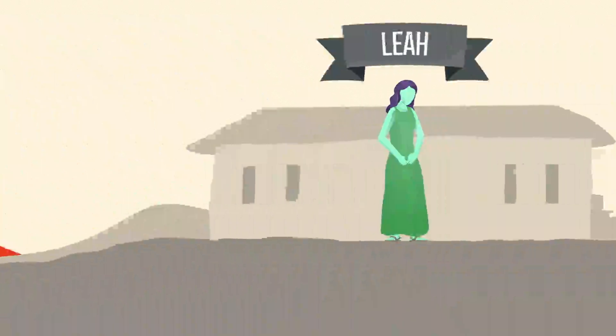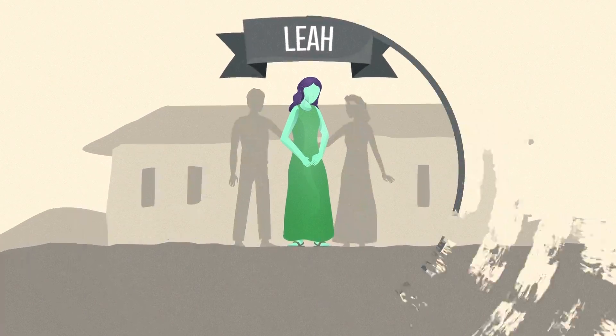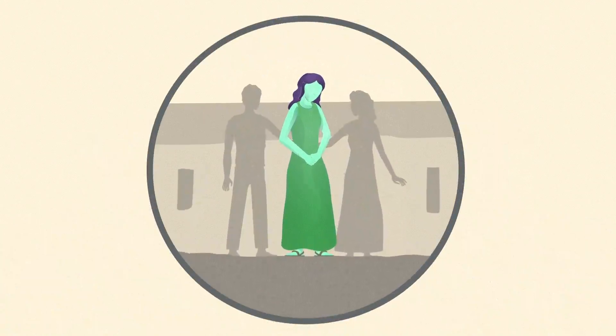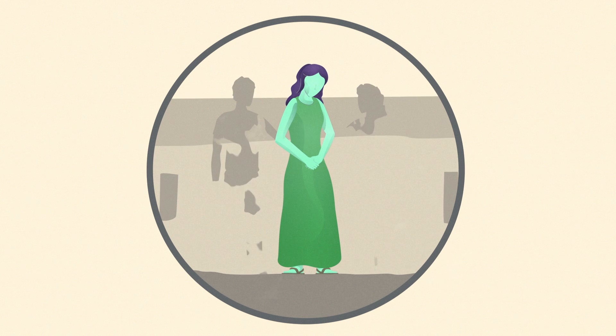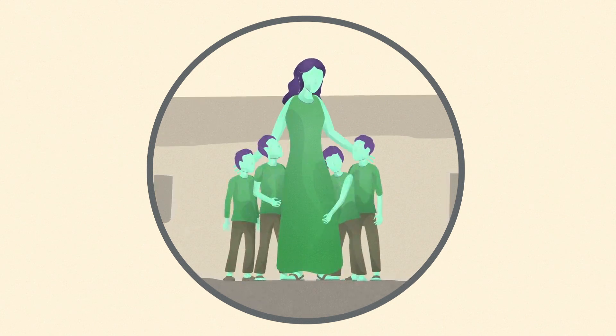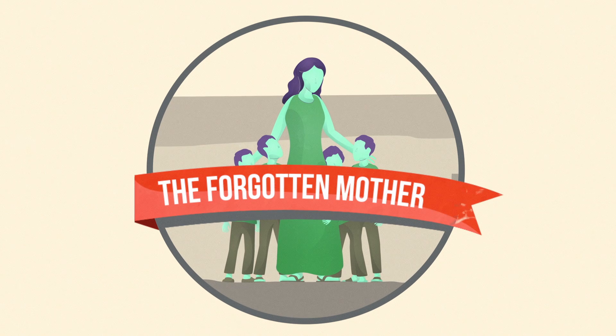Leah was the firstborn, overlooked by her husband Jacob, who gave his heart to her younger sister. When the Lord saw that Leah was hated, he opened her womb. Despite Jacob's disdain, she found her motherhood in the Lord.